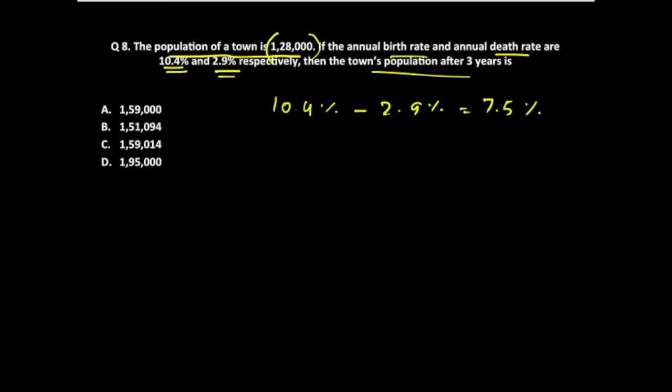Now if you look at the number 1,28,000, you will notice that it can be written as 128,000, which can be written as 2 raised to power 7 into 1000, or 10 to power 3.